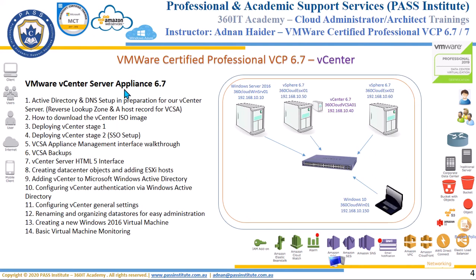When you install the VCSA appliance, once the installation is complete, the appliance becomes a VM inside the ESXi host. There are two ways of having vCenter: one way is to create a Windows Server and install vCenter on it as a standalone Windows Server. The second type is VCSA — the vCenter Server Appliance — which is hosted on an ESXi host. With version 6.5, Windows vCenter was removed, and in 6.7 and above all features of Windows vCenter are now present in VCSA.